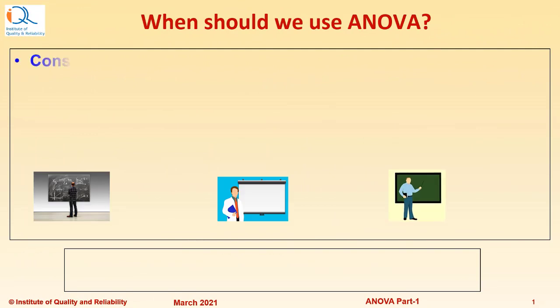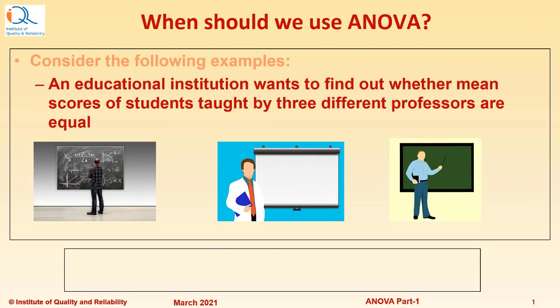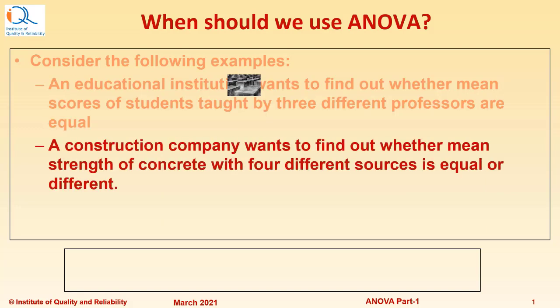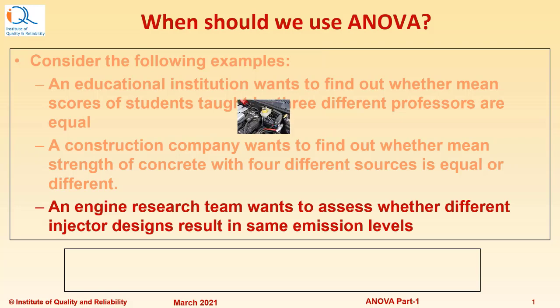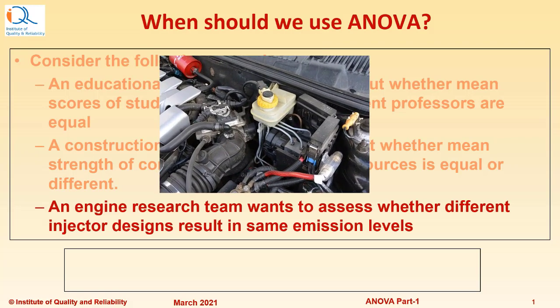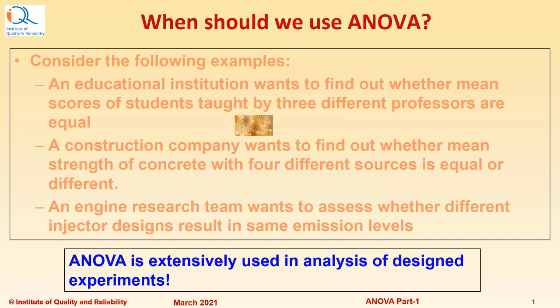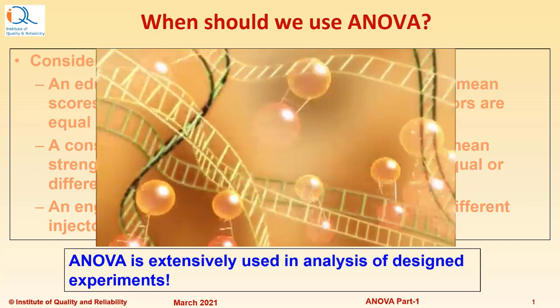When should we use ANOVA? Consider the following examples. An educational institution wants to find out whether mean scores of students taught by three different professors are equal. A construction company wants to find out whether mean strength of concrete with four different sources is equal or different. An engine research team wants to assess whether different injector designs result in the same emission levels. ANOVA is extensively used in analysis of designed experiments.